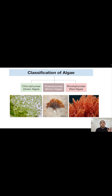Algae is divided into three classes. First is Chlorophyceae, which is also known as green algae. Then Phaeophyceae, which is also known as brown algae. Then Rhodophyceae, which is also known as the red algae.